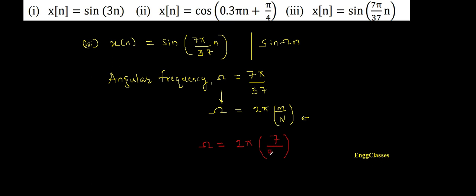I should write 37 here as 74, because I can divide 74 by 2 and get 37. So ω = (7/74)·2π, which gives me 7π/37. Therefore the given signal is periodic — I could express the angular frequency as a rational multiple of 2π.